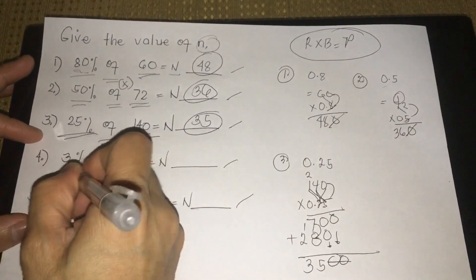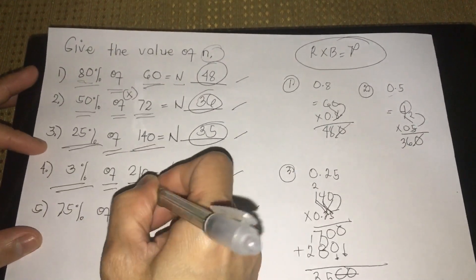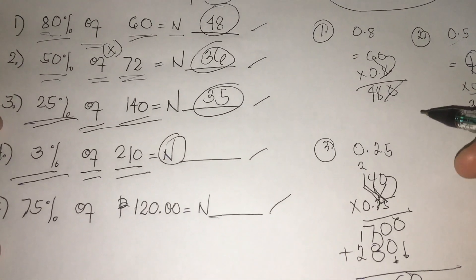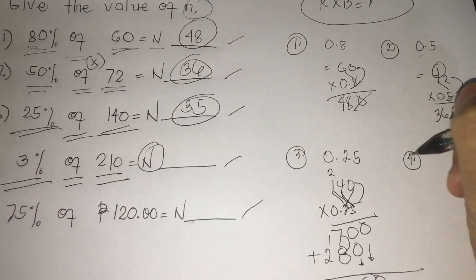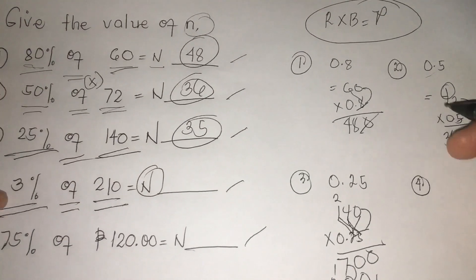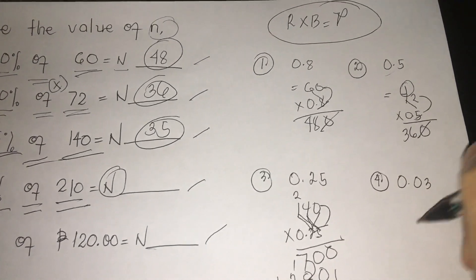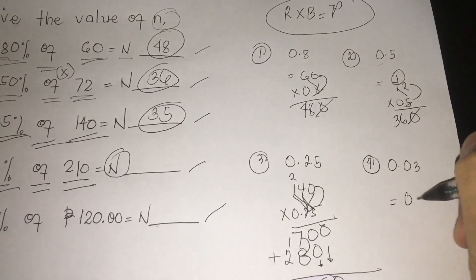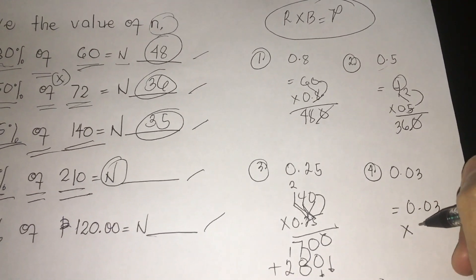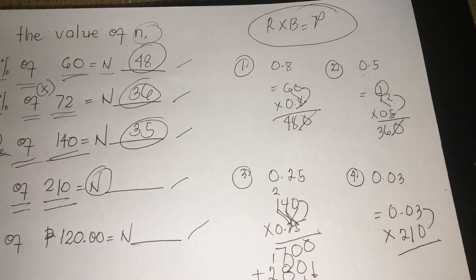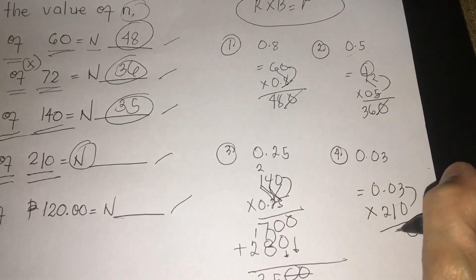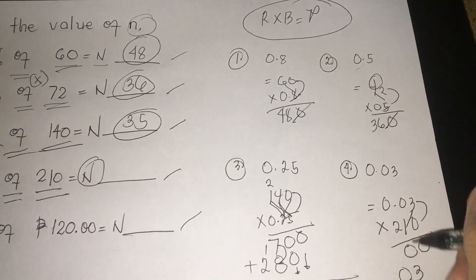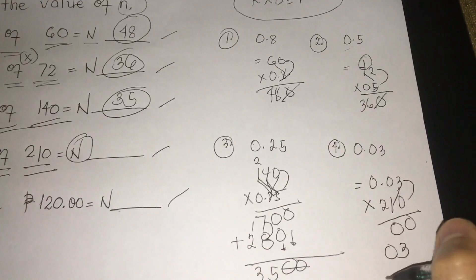Next, number 4: 3% of 210 is equal to N. We are going to unlock the value of N. So we are going to convert number 4 from percent to decimal. So 3% is 0.03. Let's multiply first: 0.03 times 210. So 3 times 0 is 0, 1 times 0 is 0, 1 times 3 is 3, 2 times 0 is 0, 2 times 3 is 6.